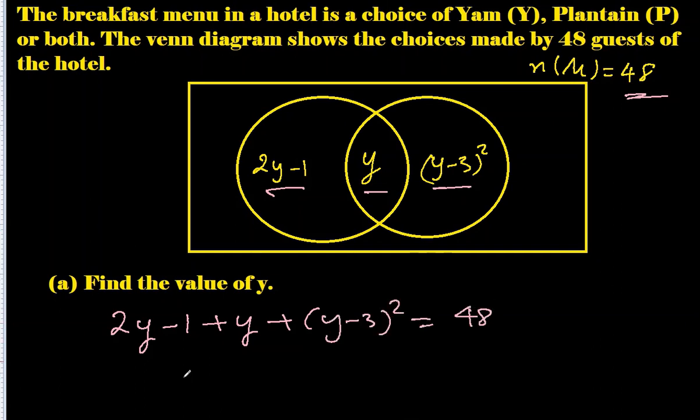2y plus y is 3y minus 1, and let me bring this also, minus 48 here. Only thing remaining is this, we have to open this square bracket. So let's do it: y² + 9 - 6y = 0.